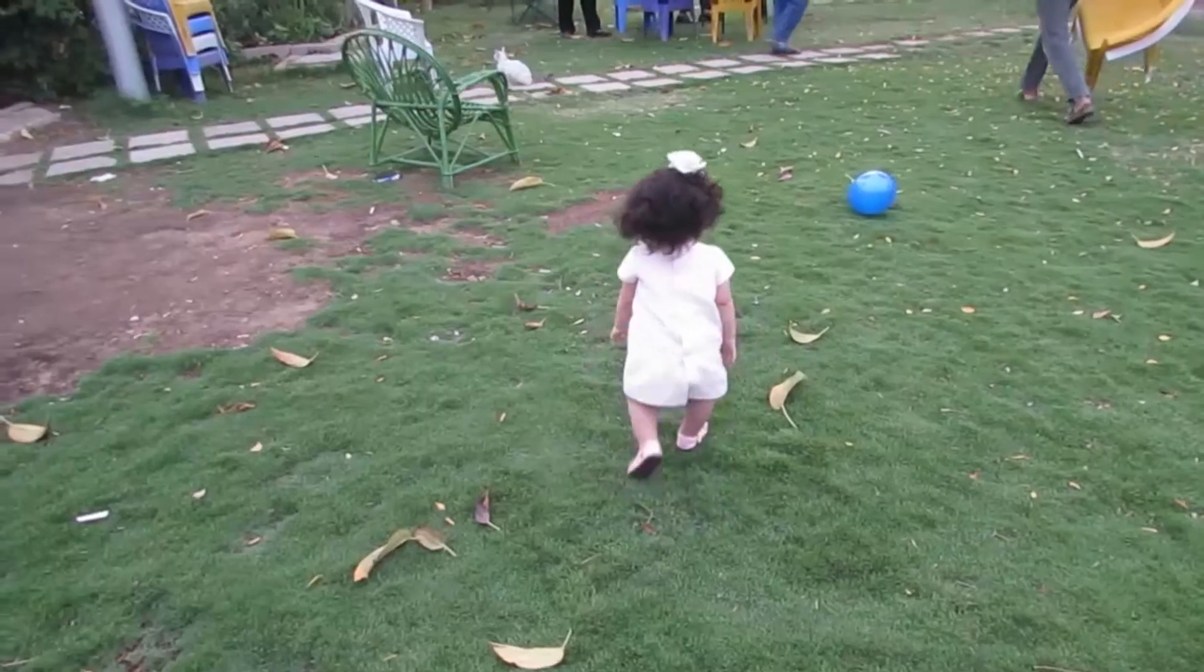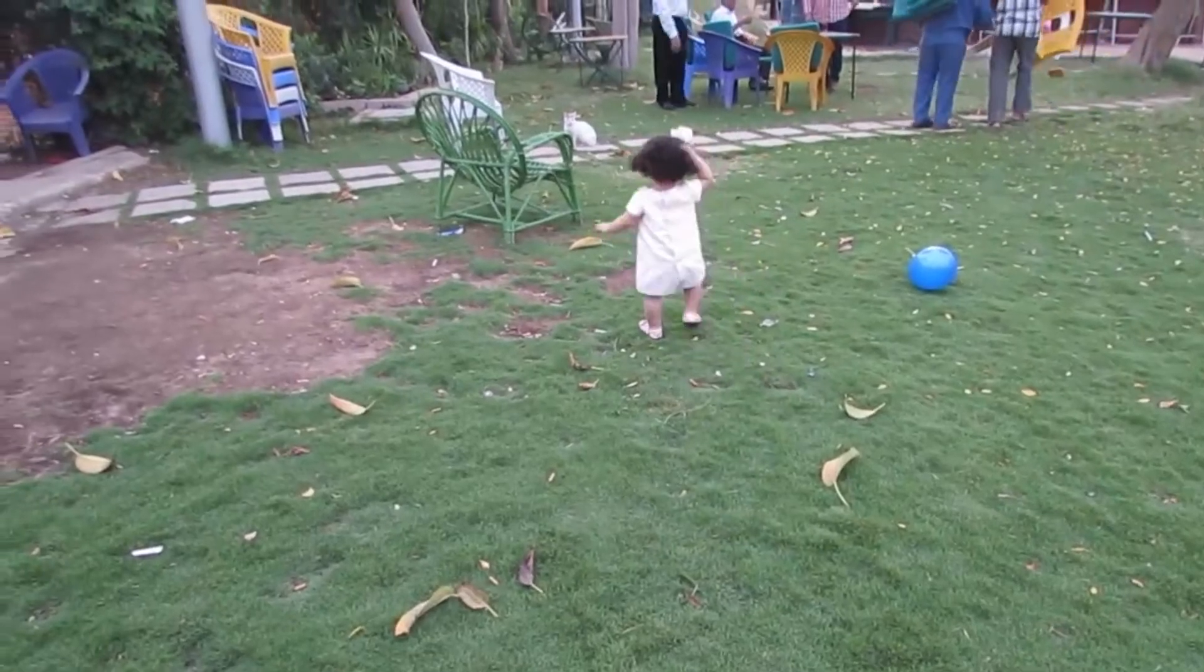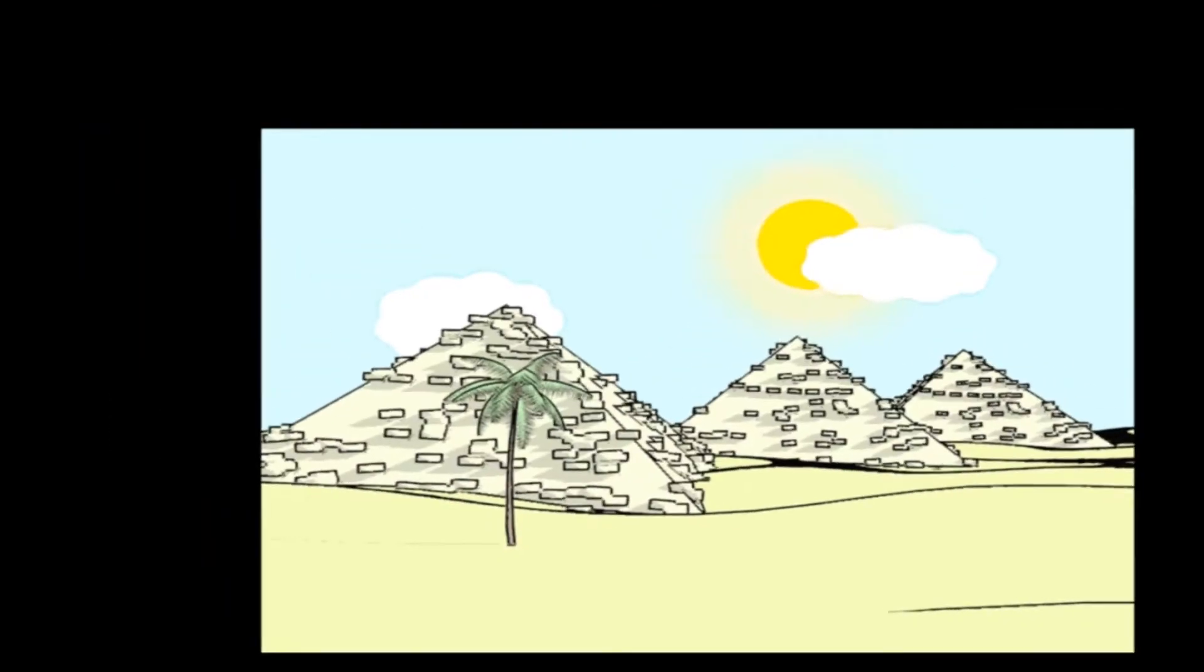If the unwanted object moves, it leaves a clear area of the background while it's moving. So if we register each previous frame with the current frame, we can generate a background without any unwanted objects.